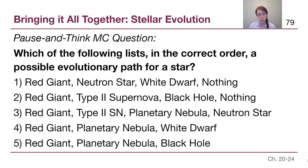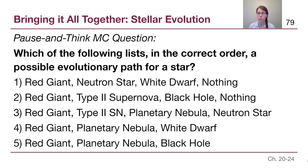Option 3 — red giant, type 2 supernova, planetary nebula, neutron star — has a problem because a type 2 supernova and a planetary nebula are the two different possibilities for the outer layers of a star. You can't use the same material for both. Option 4 — red giant, planetary nebula, white dwarf — works perfectly fine; that's what the sun is going to do. Option 5 — red giant, planetary nebula, black hole — is not correct because you cannot make a black hole from the gentle puffing off of layers in a planetary nebula; it requires an extremely violent event like a type 2 supernova. The answer is option 4.